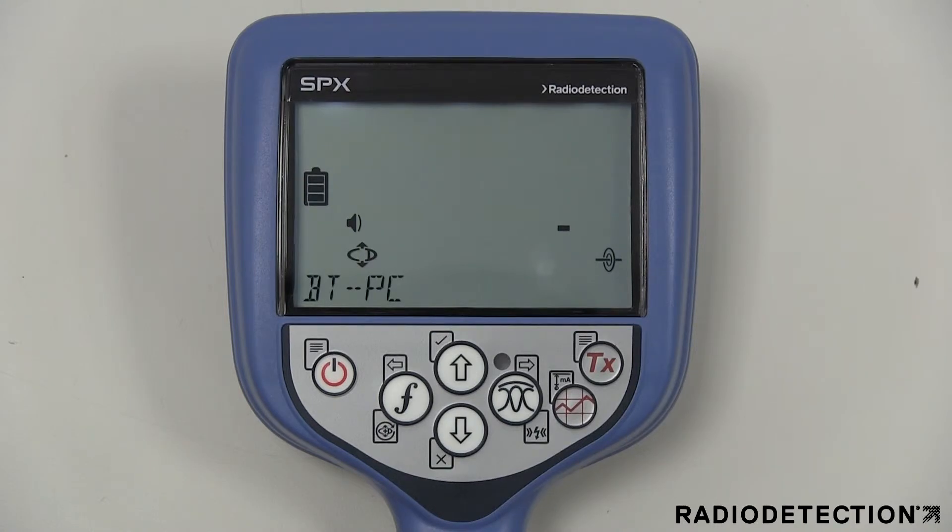The BT PC option allows you to turn on or off the sending of data automatically to a connected PDA or computer.